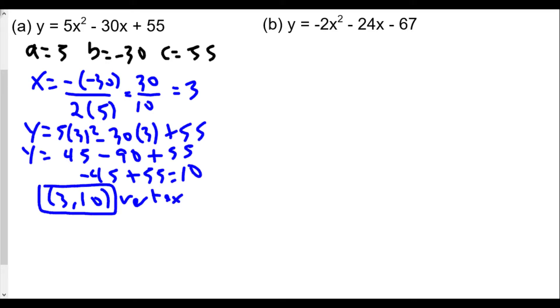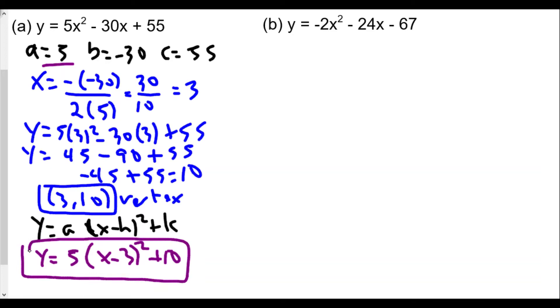For the vertex form, we do y equals a times (x minus h) squared plus k. We're going to plug in the a value of 5, so y equals 5 times (x minus 3) squared plus 10. So finding the vertex has allowed us to find the vertex form of the original equation.